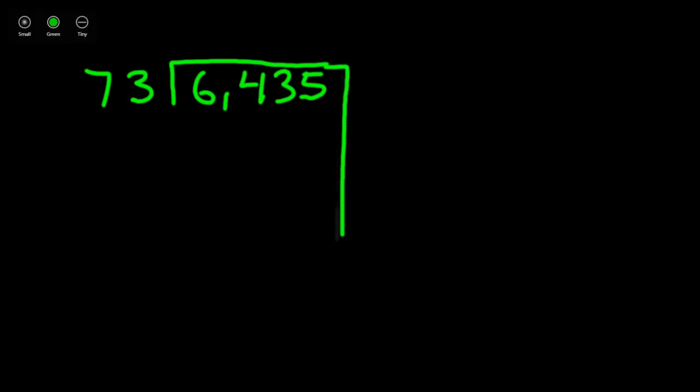We're going to use a two-digit divisor of 73 and a dividend of 6,435. Now to make division easier for me, I always like to first make my numbers simpler or easier. I'm going to set up a couple columns here.